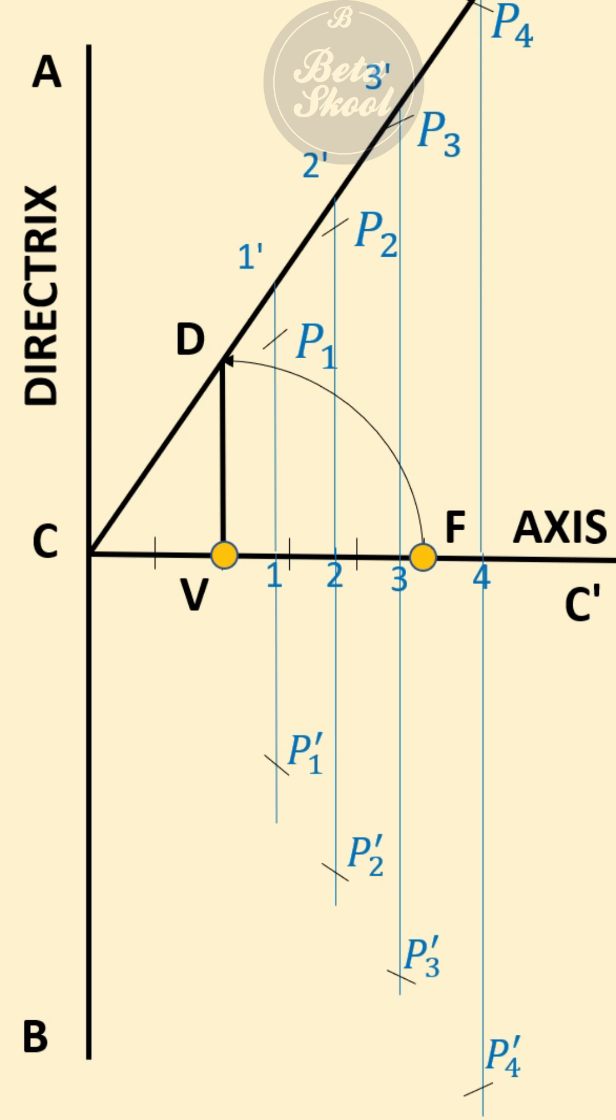Now to draw the tangent and normal, you have to mark a point on the hyperbola. We have marked point P on the hyperbola. Now join P to the focus F. On this line at point F, you draw a 90-degree line which intersects with the directrix AB at point T.